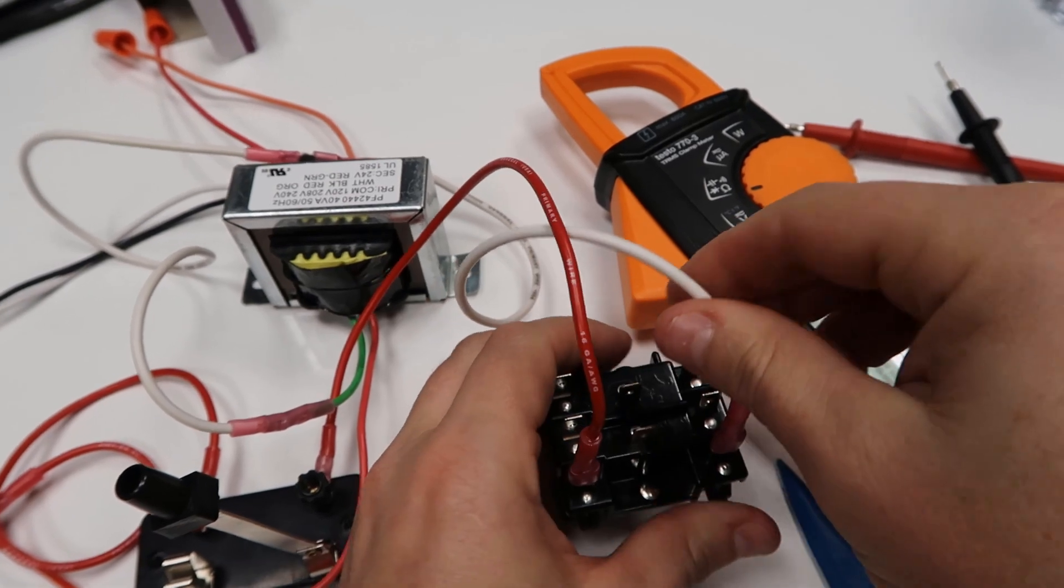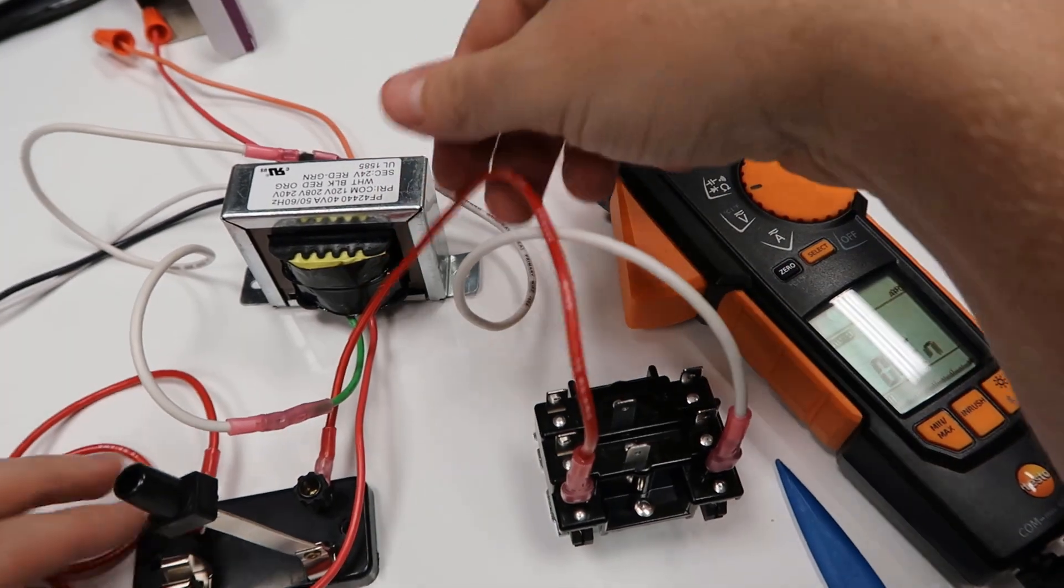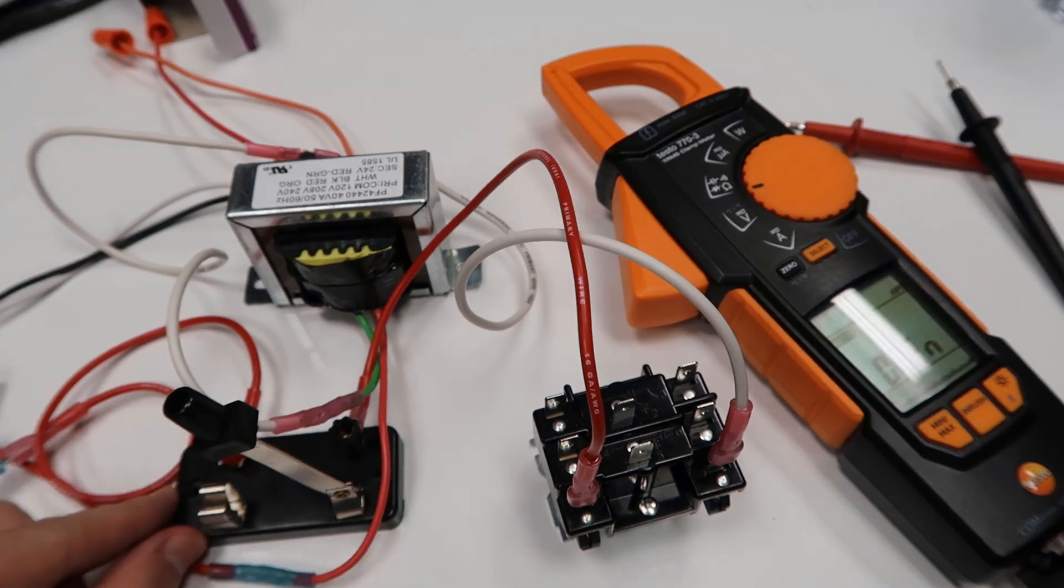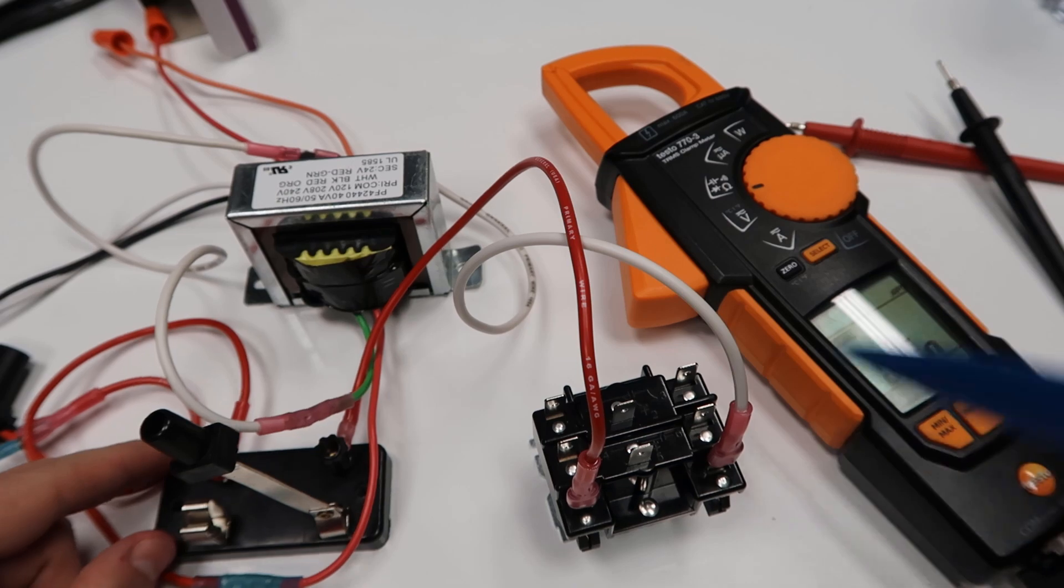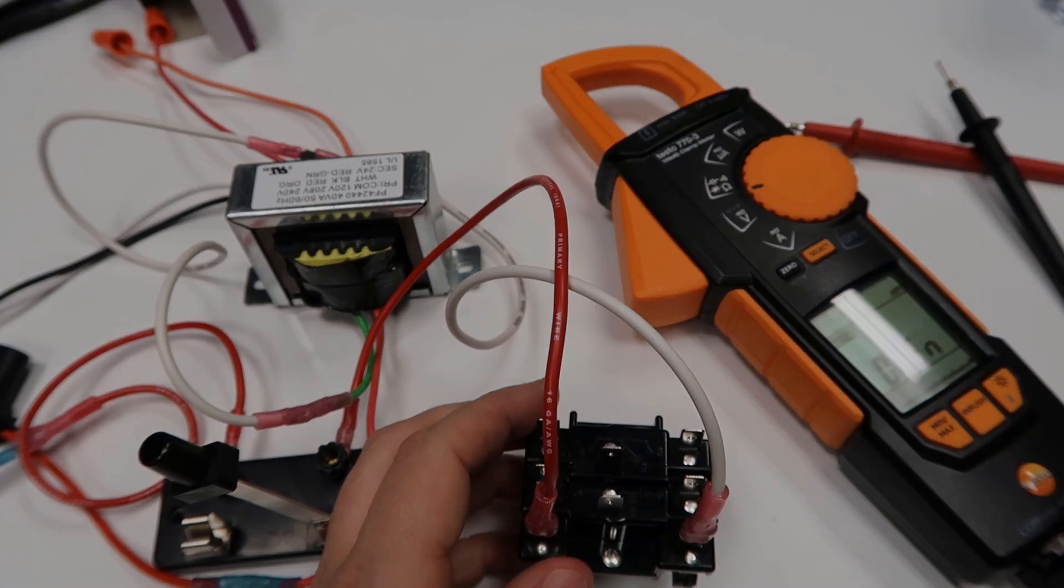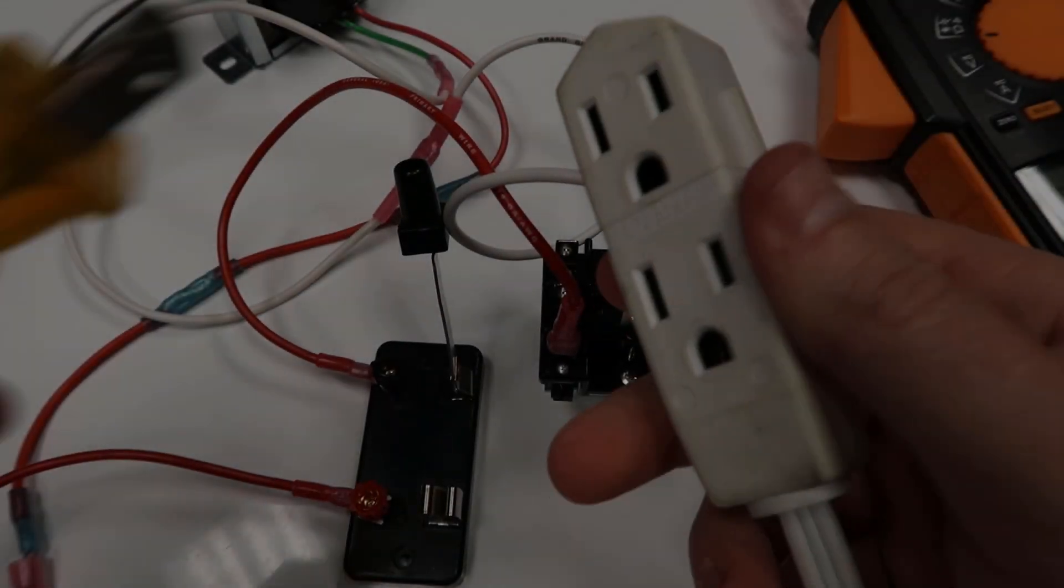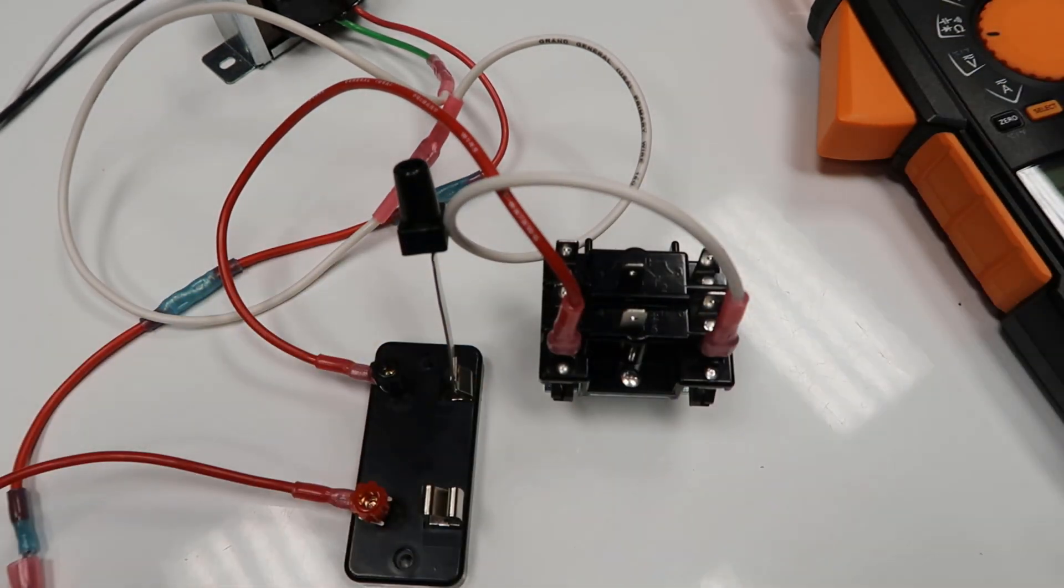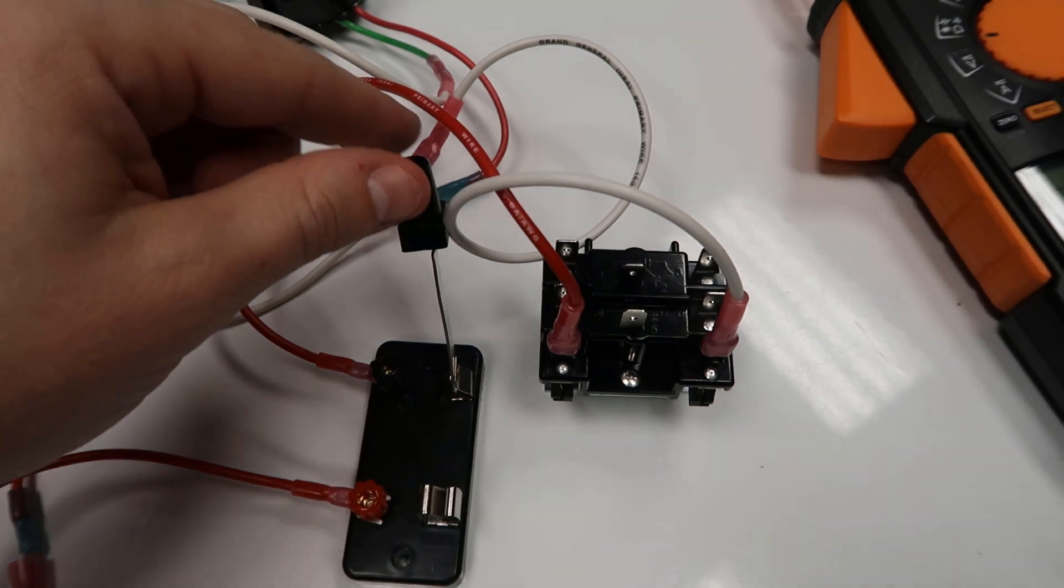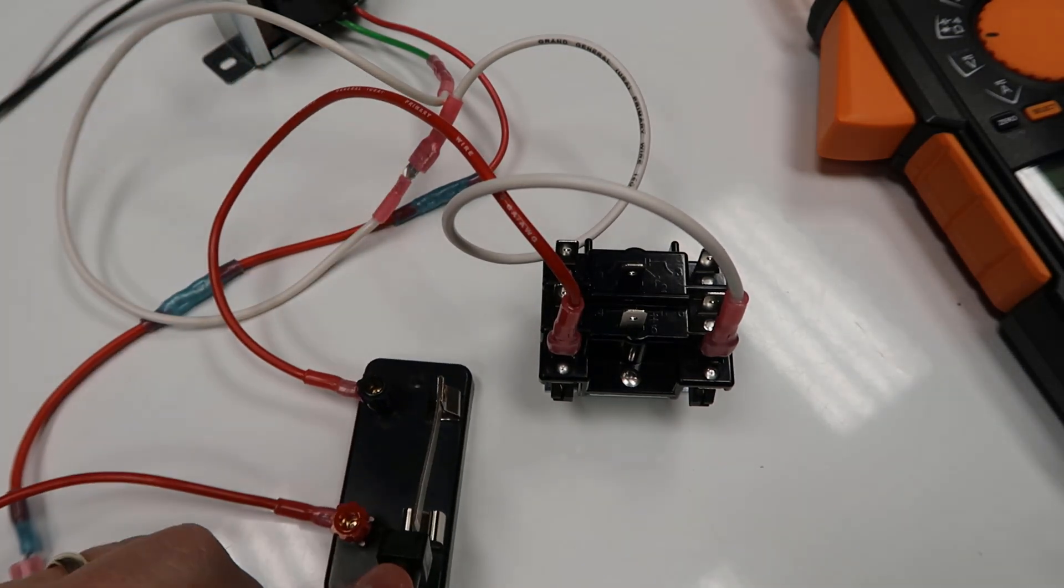Now, what's happening is we have our hot leg coming out of our transformer that's going into this switch, and then out of this switch, it's going into our relay coil, and then back to the common side, the other side of the transformer. We've got our plug here. We're going to plug it in. Switch is open right now. So when I energize this switch, the relay should switch.